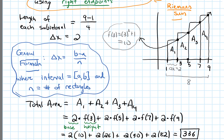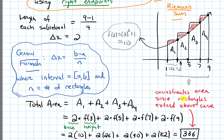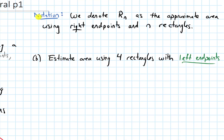Looking at the picture, because the rectangles extend over the curve, this is going to overestimate the actual area since the rectangles extend above the curve. We'll denote R subscript n as the approximate area when using right endpoints and n rectangles. For this problem, we used right endpoints with 4 rectangles, so R4 equals 336.